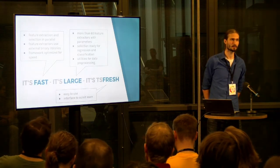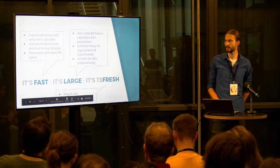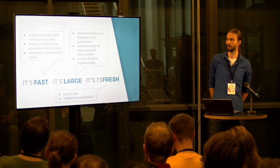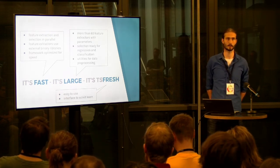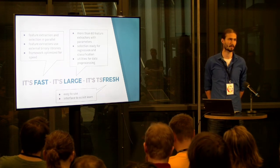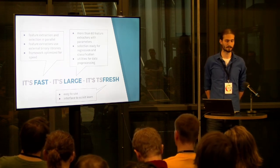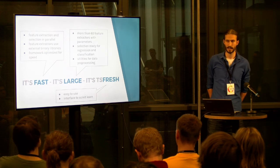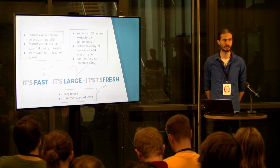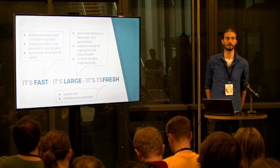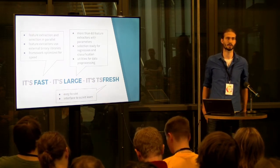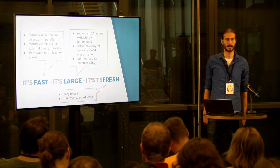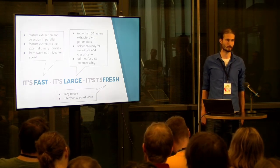During the development of TSFresh, we thought a lot about speed. The framework itself is optimized for speed — it's multiprocessing and runs in parallel, and the feature extractors use already-known binary libraries like NumPy and SciPy. With more than 60 feature extractors and in total more than 500 extracted features per time series, and the selection which is ready for classification or regression tasks — whether you have a real-valued or binary target — we can handle a large number of use cases. We also tried to make it as easy as possible to use, with interfaces to scikit-learn transformers so you can use it in your pipeline.